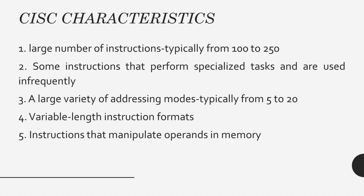If we want to characterize or classify CISC, we can do it in the following way. First, it has a large number of instructions ranging from 100 to 250 types. Second, it also has specialized instructions that are not used very frequently. It also supports a large variety of addressing modes, ranging from 5 to 20 types, and the length of the instruction format also differs.